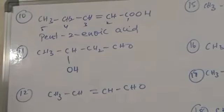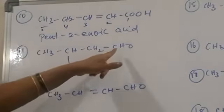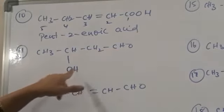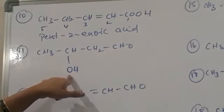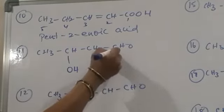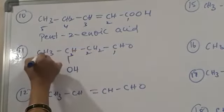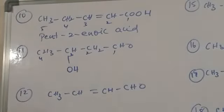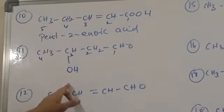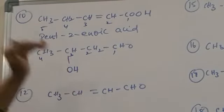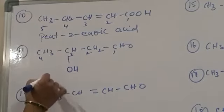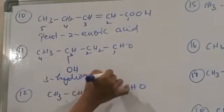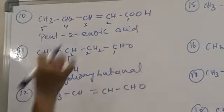Next: 4-carbon compound. Longest chain having 4 carbons. Main functional group is aldehyde functional group, and there is also an alcohol functional group — this becomes the substituent. Numbering starts from the aldehyde end: 1, 2, 3, 4. Third carbon bears the functional substituent. OH is a substituent, so the name is 3-hydroxybutanal.